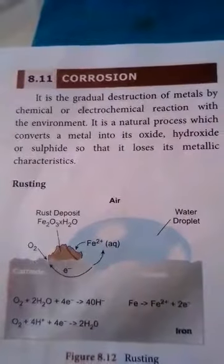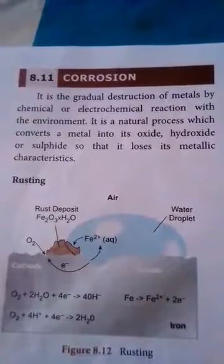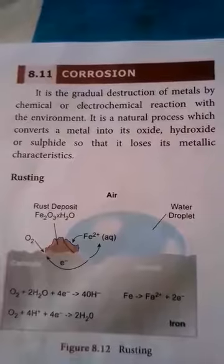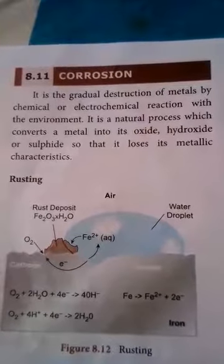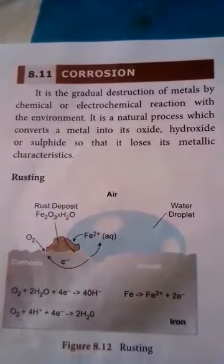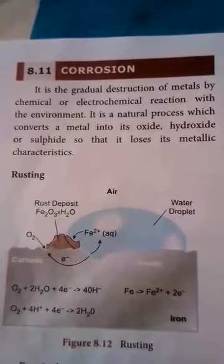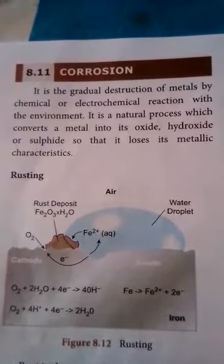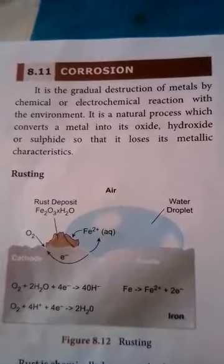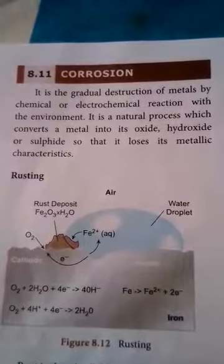Corrosion is the gradual destruction of metal by chemical or electrochemical reaction. It is the reaction of a metal with its environment. It is a natural process which converts a metal into its oxide, hydroxide, or sulfide, so that it loses its metallic character.